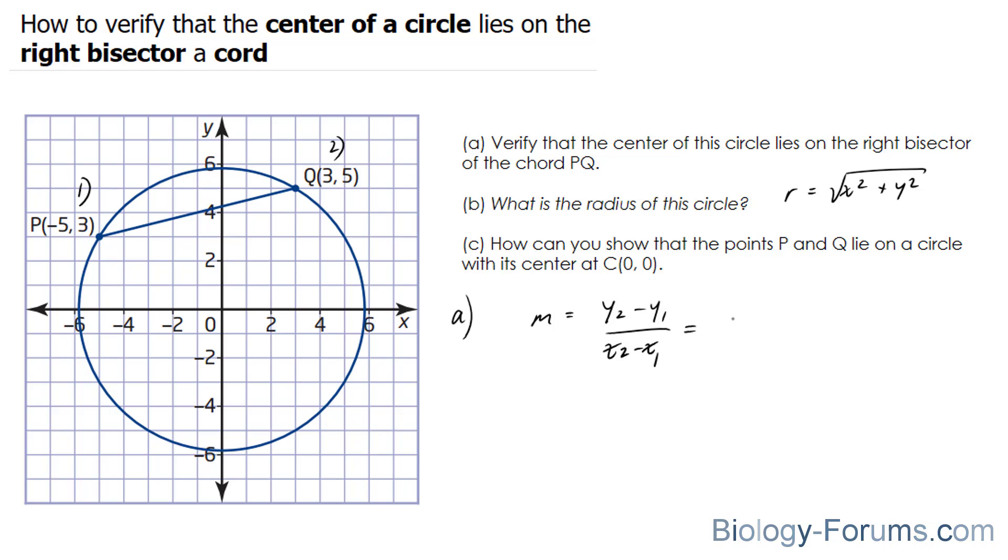And our y2 point is 5 minus 3. And our x2 is 3 minus negative 5. 5 minus 3 is 2. And 3 plus 5 is 8, giving us a slope of a quarter.